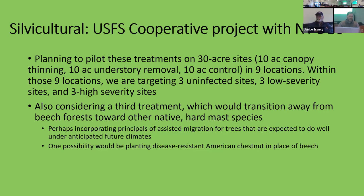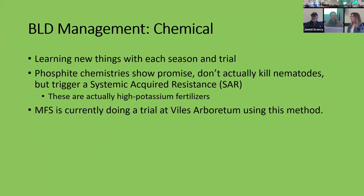This is a big trial that should shed some good light on silvicultural techniques to help beech resilience against beech leaf disease. They're also considering a treatment to replace the mast species with disease-resistant chestnut if funding allows. On chemical BLD management: phosphite chemistries show some good promise in helping trees cope with beech leaf disease. They don't actually kill the nematodes, but they trigger a response in the tree that makes it less supportive of nematode populations. We are actually doing a trial at Viles Arboretum in Augusta using this method — we did two treatments last year and are planning to do it again this next year.